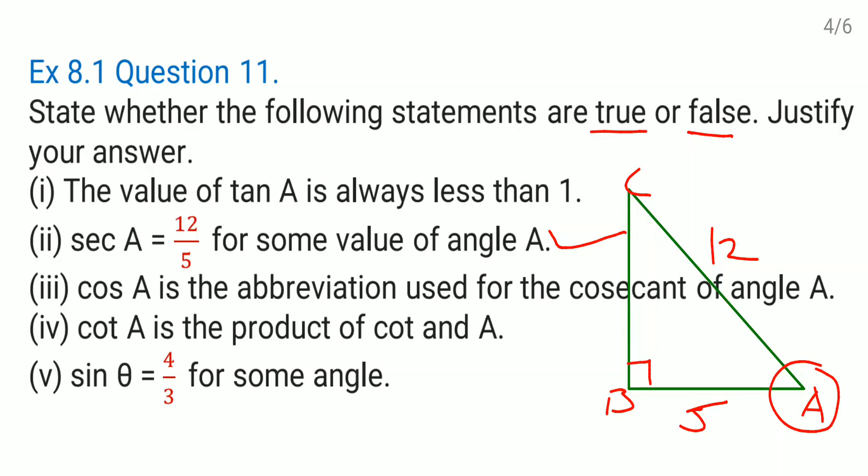Okay, come to the fourth one. Now they said cot A is the product of cot and A. No, cot itself doesn't have any value without the angle, right? If you write down cot A, it means that adjacent side of angle A divided by the opposite side of angle A is the justification.